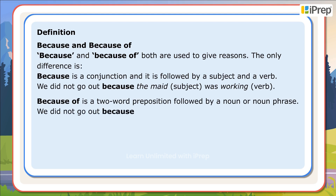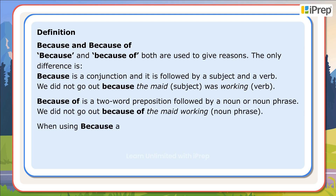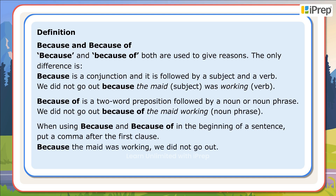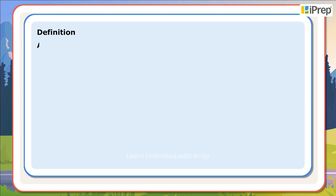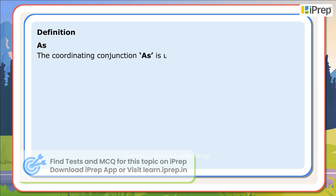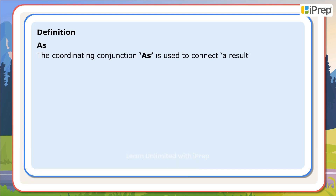'Because of' is a two-word preposition followed by a noun or noun phrase. For example: We did not go out because of the maid working — 'the maid working' is a noun phrase. When using 'because' or 'because of' at the beginning of a sentence, put a comma after the first clause. For example: Because the maid was working, we did not go out. Because of the maid working, we did not go out.